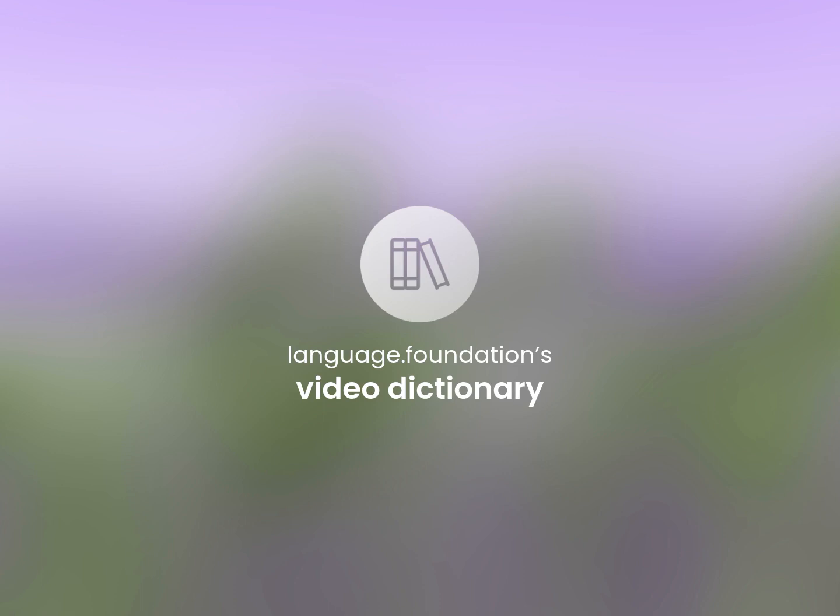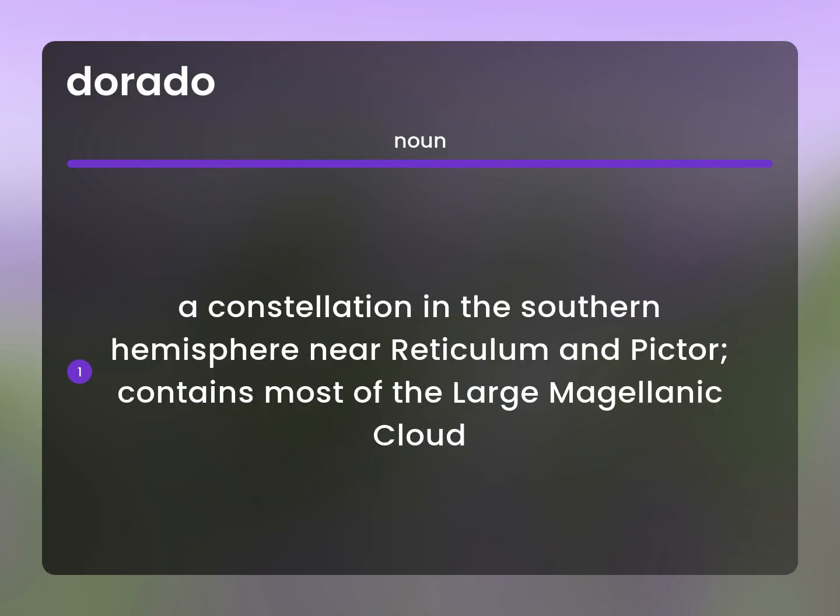Language Foundation's Video Dictionary, helping you achieve understanding. A constellation in the southern hemisphere near Reticulum and Pictor contains most of the large Magellanic Cloud.